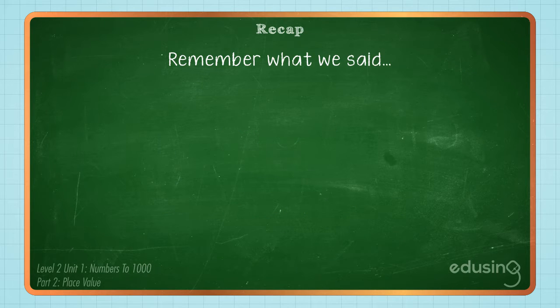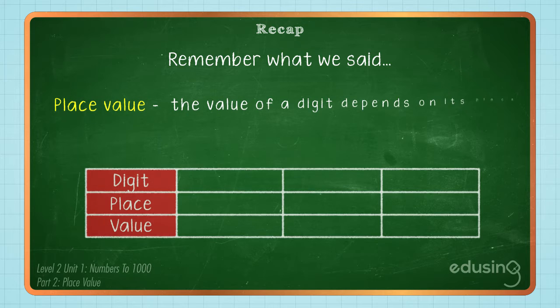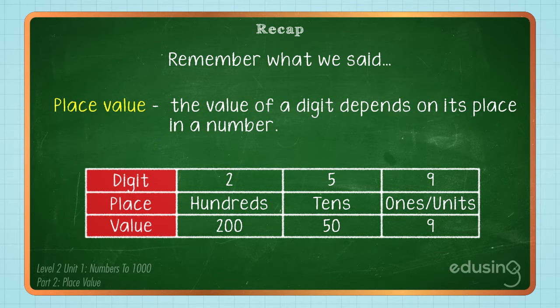Remember, to count to 1000, we make groups of 100 and groups of 10. The value of a digit depends on its place in a number.